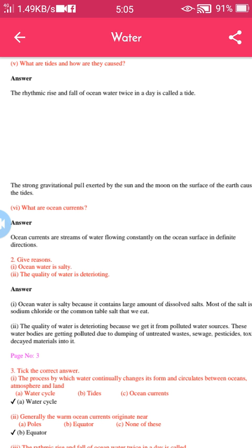Sixth question: What are ocean currents? Answer: Ocean currents are streams of water flowing constantly on the ocean surface in definite directions.